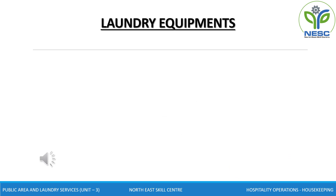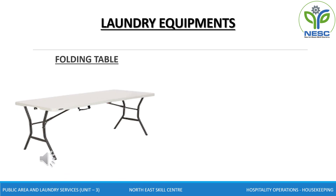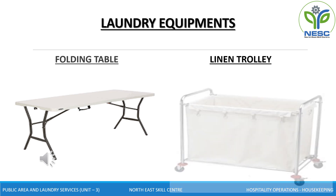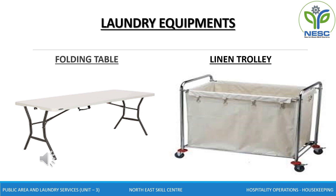In the previous slides we learned about different types of laundry equipment. Now let's go through a few of the items which play a vital role in a laundry. First is the folding table. A folding table is a handy option for any laundry room — it is the perfect place for sorting colors before washing and folding the clothes as soon as they are dry. Next is the linen trolley. The linen trolley is used to carry dirty linen, clothes, napkins, towels, etc. It is also extremely useful for distributing linen in floor pantries and in the linen room.